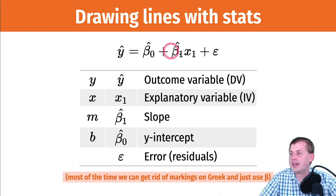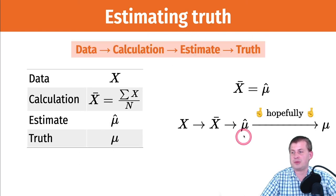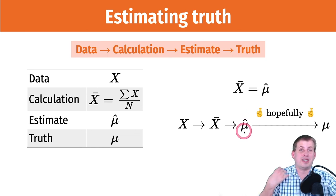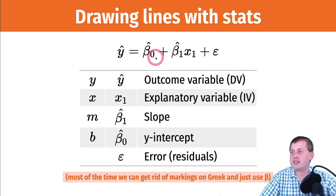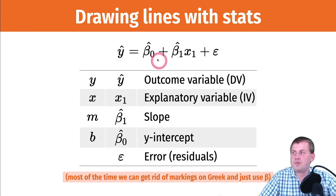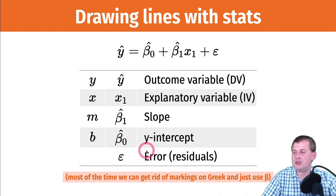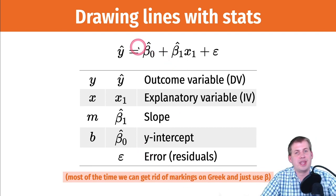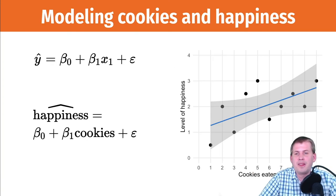In the real world, equations are often written without hats on the Greek letters, though you'll still see them on Latin letters since those signal calculated statistics. Often you'll just see beta-0 plus beta-1 x1 without hats, because we're assuming that parameter represents the whole population. For simplicity, you'll often see it without the hat — and that's totally fine.